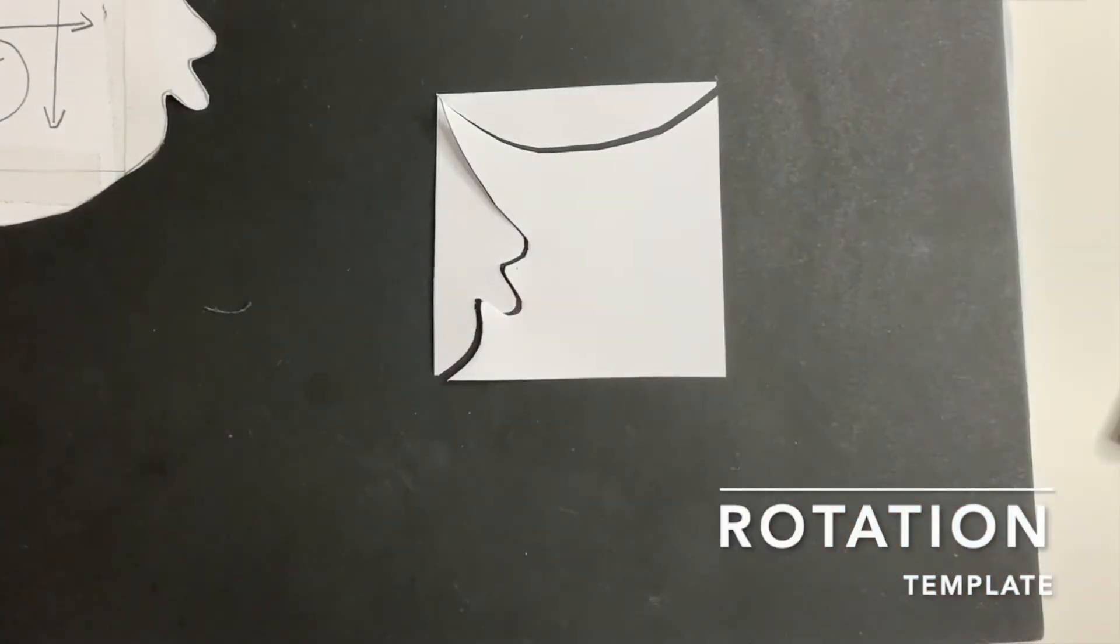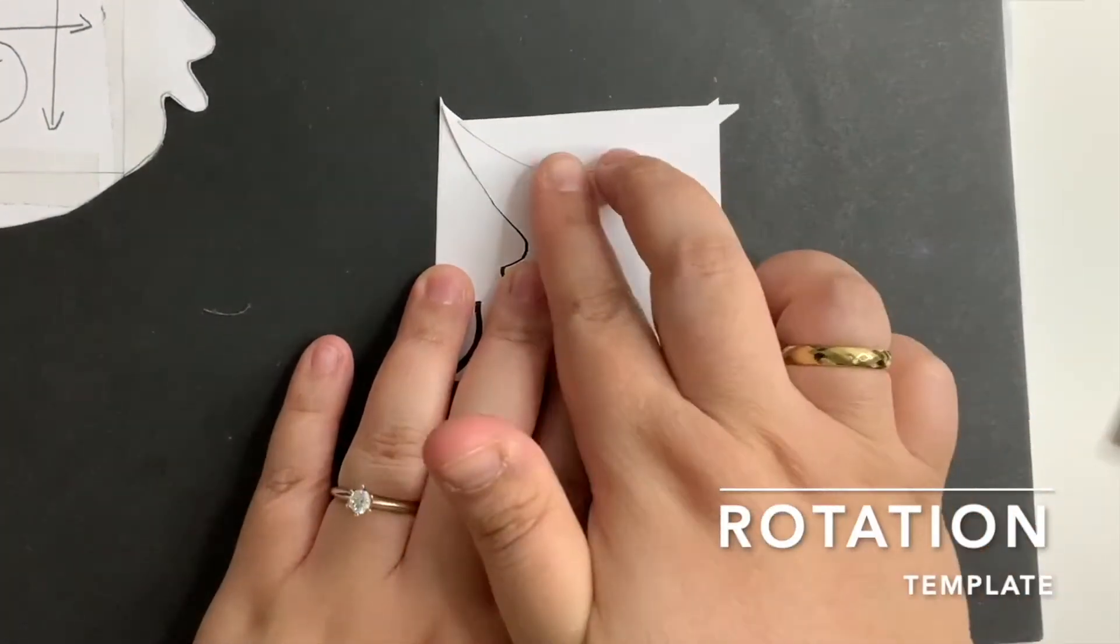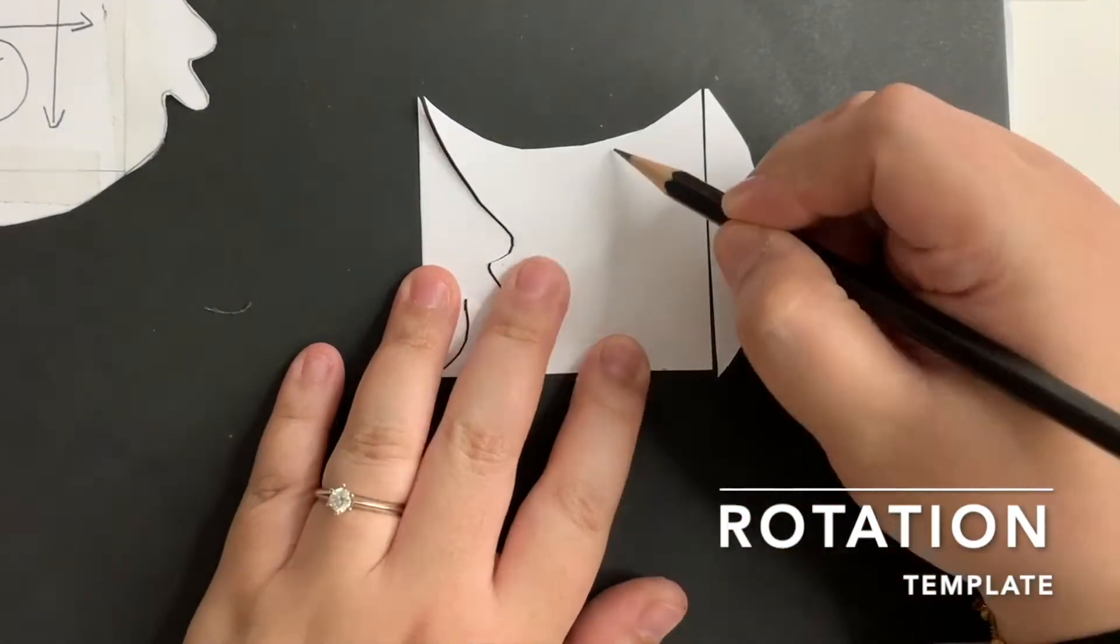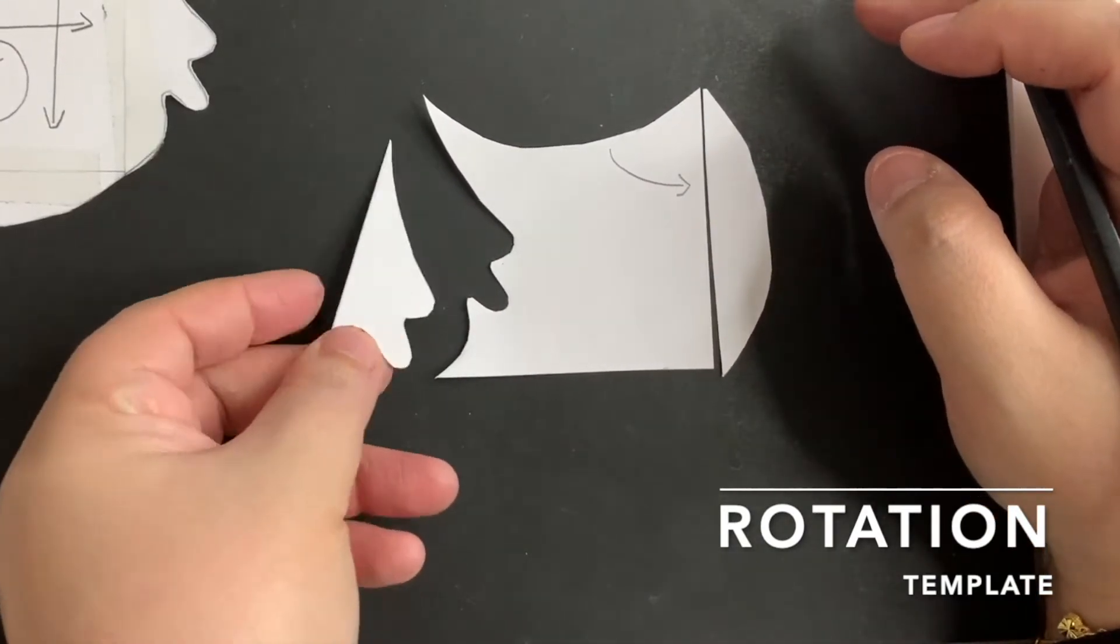Next, I'm going to use the same shape to do the rotation template. Slide the top piece to the nearest side like this. Now, slide the left piece also to the nearest side like this.